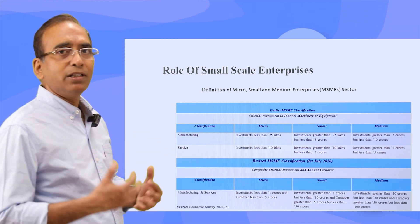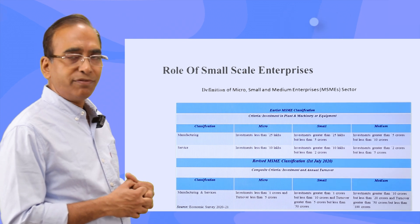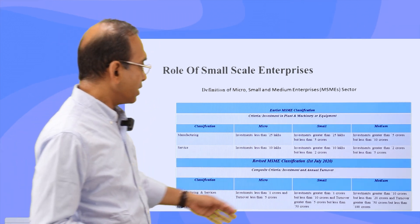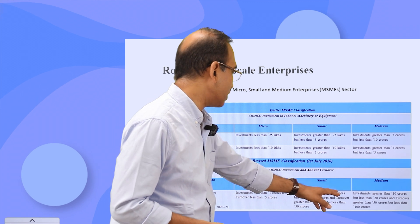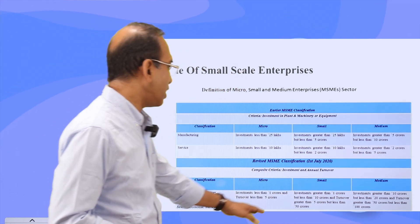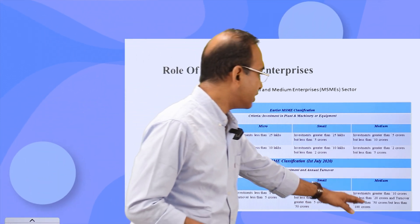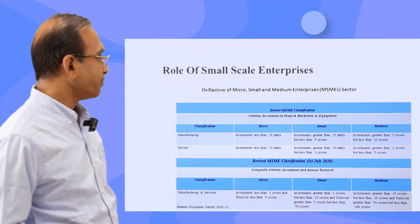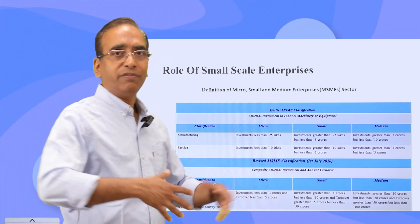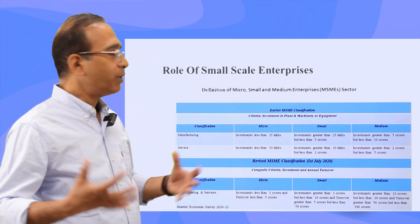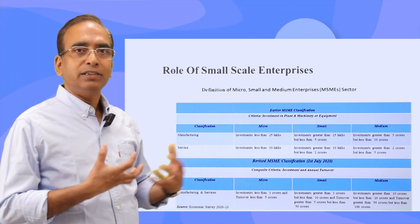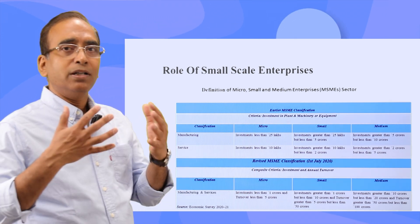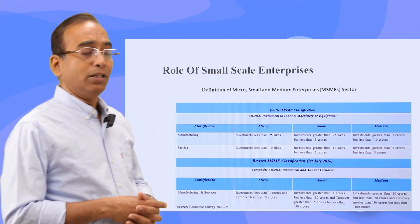By broadening the investment thresholds, smaller-scale sectors can receive more government benefits — because government incentives are defined in terms of company size. For small companies, the limit has moved from ₹25 lakhs–₹5 crores to ₹1 crore–₹10 crores, with turnover greater than ₹5 crores and less than ₹50 crores. Medium-sized enterprises are now ₹10 crores–₹20 crores investment, with turnover between ₹50 crores and ₹100 crores. Companies that are relatively bigger under old definitions are now eligible for government benefits.